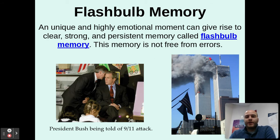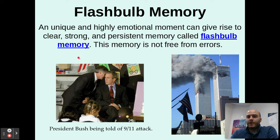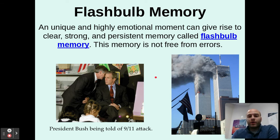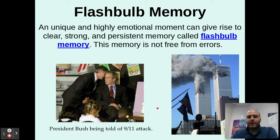There are a couple types of memory. Flashbulb memory is a unique and highly emotional moment which can give rise to a clear, strong, and persistent memory. This memory is not free from errors — emotional memories can be prone to different error issues. One of the big flashbulb moments in my generation was the 9/11 attacks. Everyone kind of remembers a snapshot in time of where they were. I was in fifth grade when the teacher told us what was going on. Everyone remembers that — you take a snapshot and all the details seem very clear because it's such a strong emotional memory.